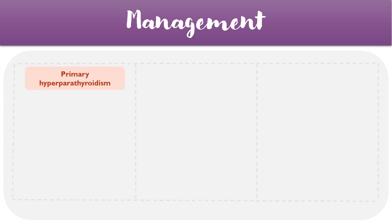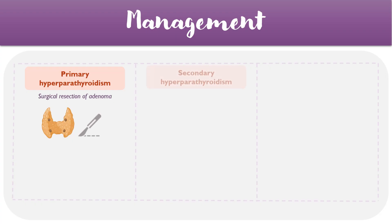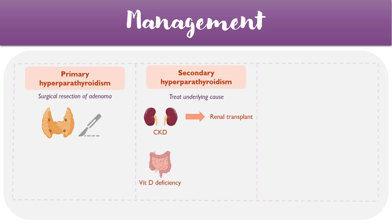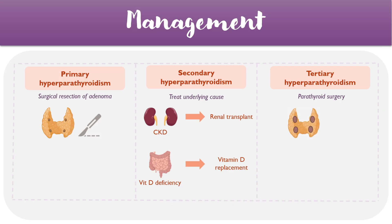The management of hyperparathyroidism depends on the type present. For primary hyperparathyroidism, surgical resection of the adenoma should cure the condition. In secondary hyperparathyroidism, it's important to treat the underlying cause — chronic kidney disease can be treated with medications or definitively with a renal transplant, and vitamin D deficiency can be corrected by replacing the deficient vitamins. Tertiary hyperparathyroidism is more complex to treat but usually involves parathyroid surgery to reduce the level of hyperplasia and return PTH levels to within a normal range.